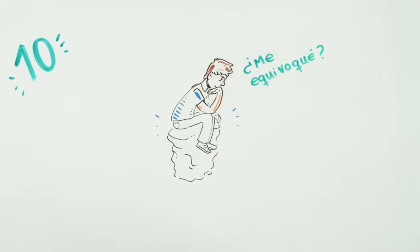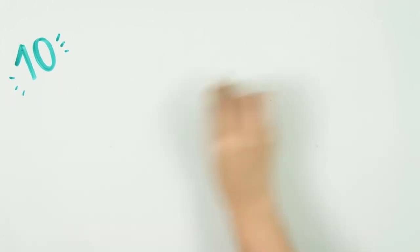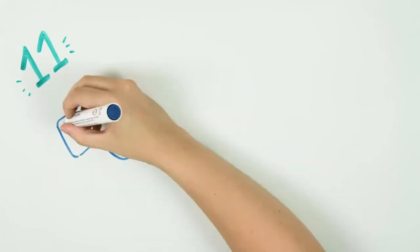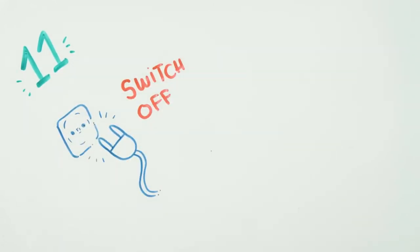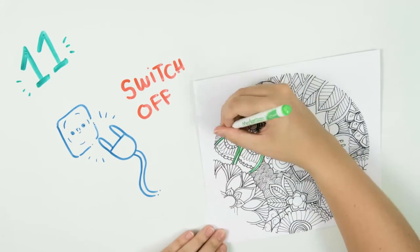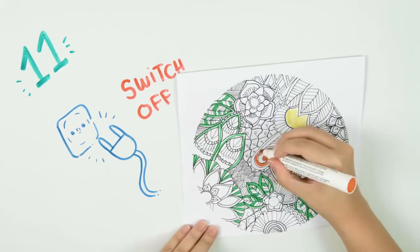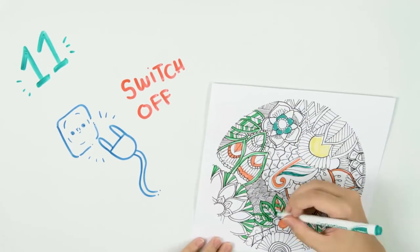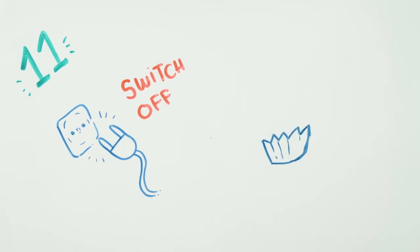Idea number 11: Disconnect. Your mind needs to rest and reset, but everyone has to find a way to do it. Some do it by coloring huge mandalas, and others by locking themselves in the kitchen and baking delicious cupcakes. Choose yours. I'm sure you'll find the best way to disconnect.